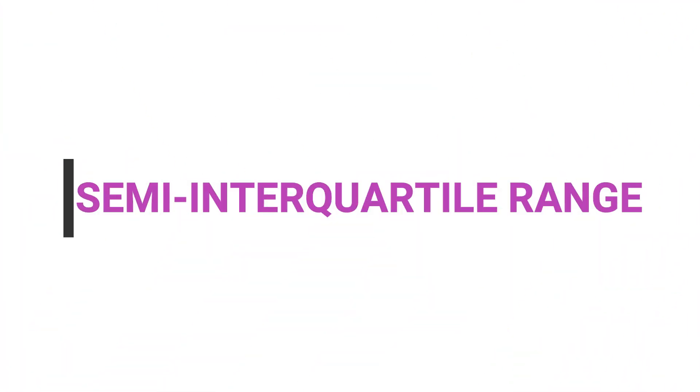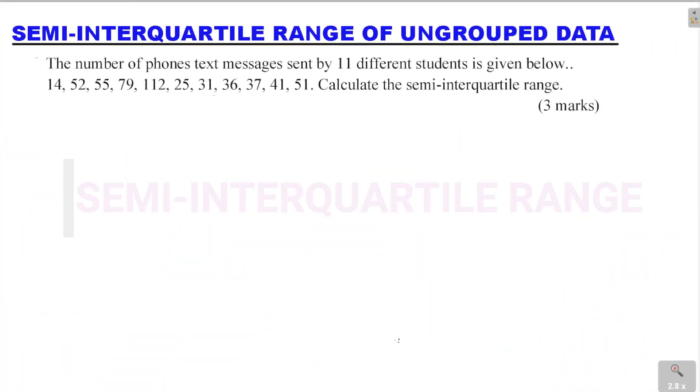Hello and welcome. Let's solve this question involving calculation of semi-interquartile range of ungrouped data. The question reads: the number of phone text messages sent by 11 different students is given below. We have the numbers from 14 all the way to 51. Calculate the semi-interquartile range of these numbers.